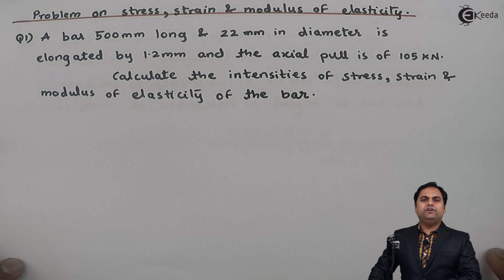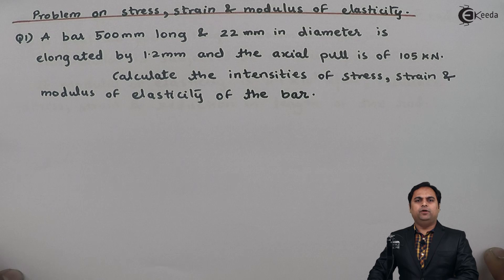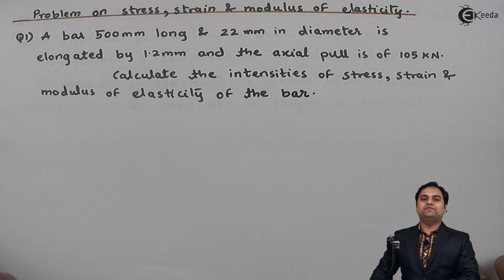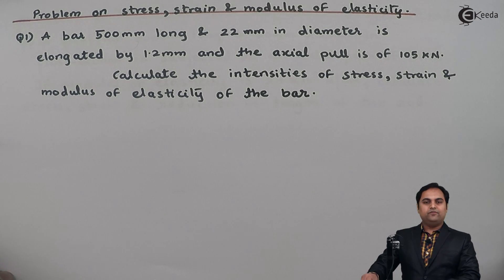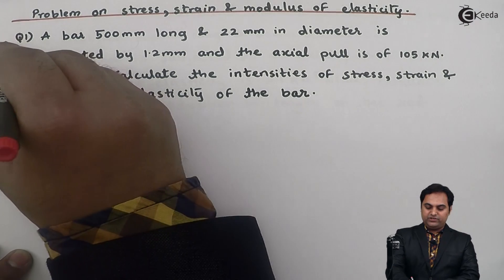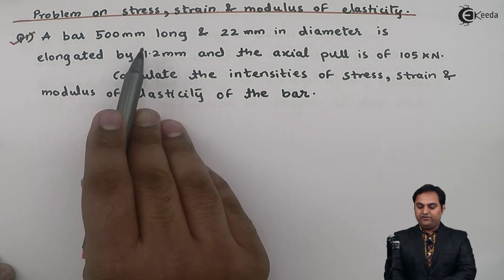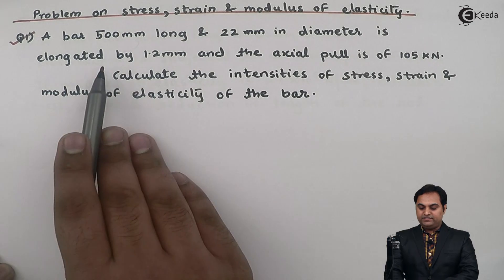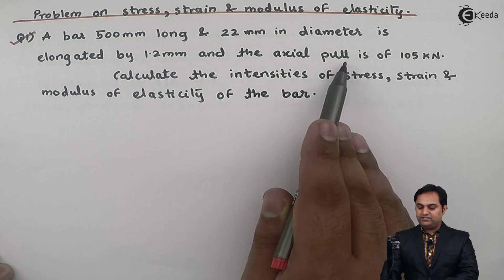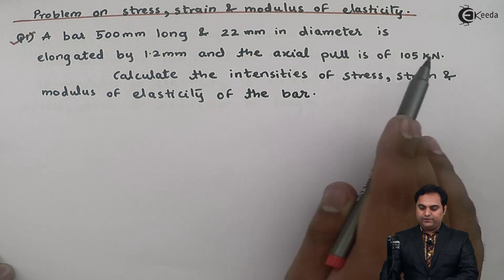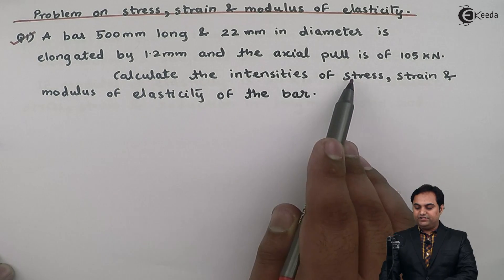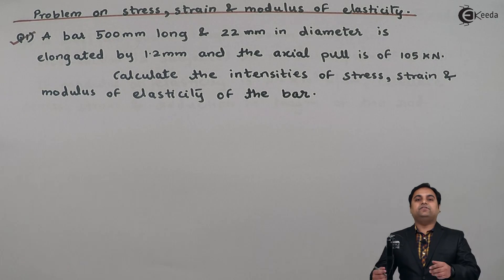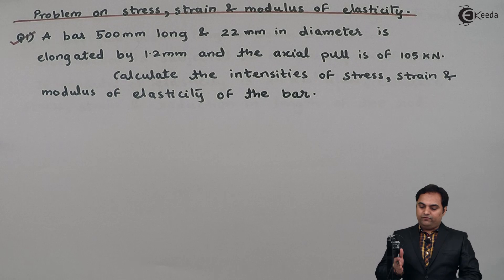Hello friends, in this video we are going to see a problem based on calculation of stress, strain, and modulus of elasticity. We have a question: a bar 500 mm long and 22 mm in diameter is elongated by 1.2 mm and the axial pull is 105 kilo Newton. Calculate the intensities of stress, strain, and modulus of elasticity of the bar.